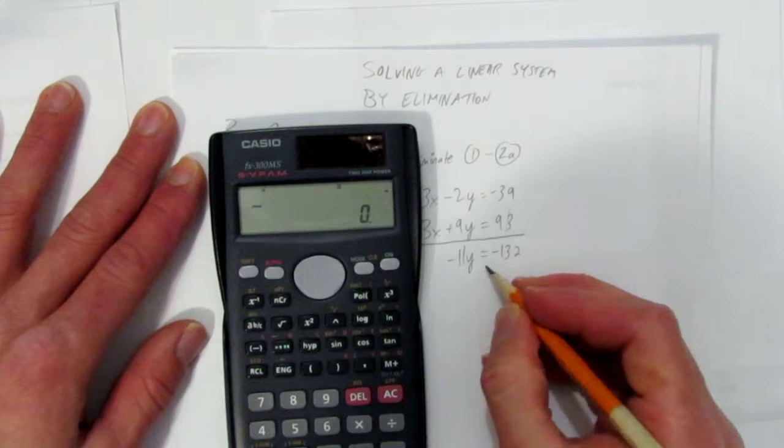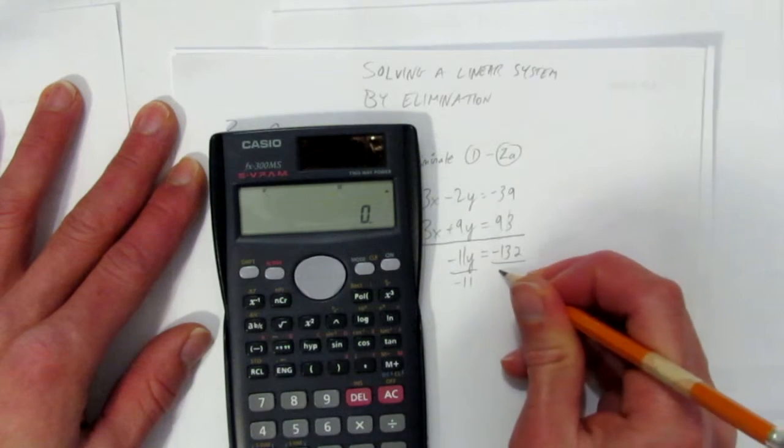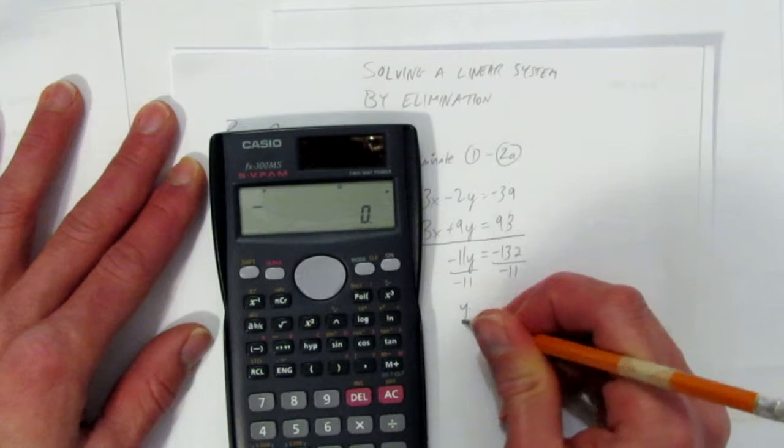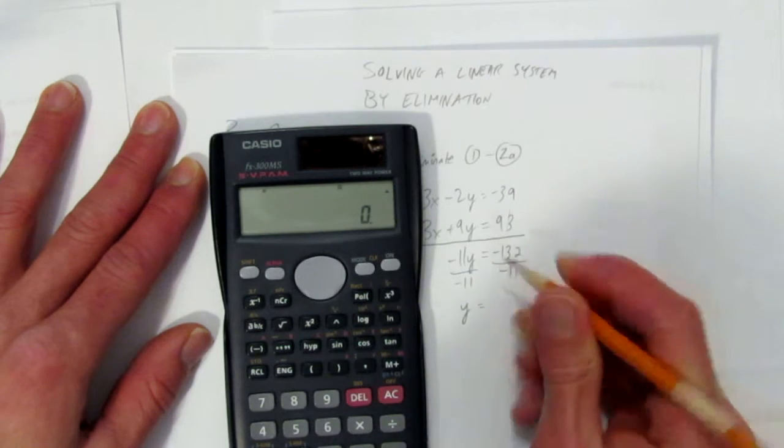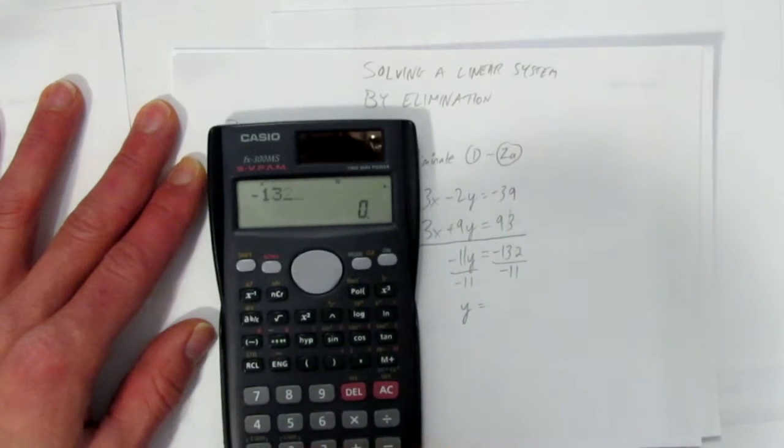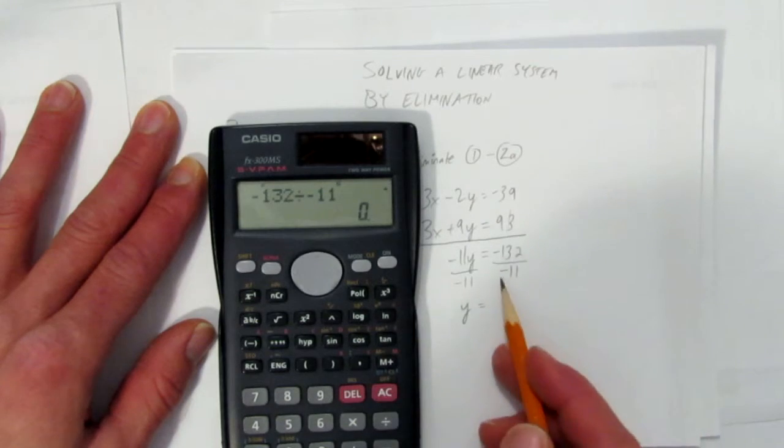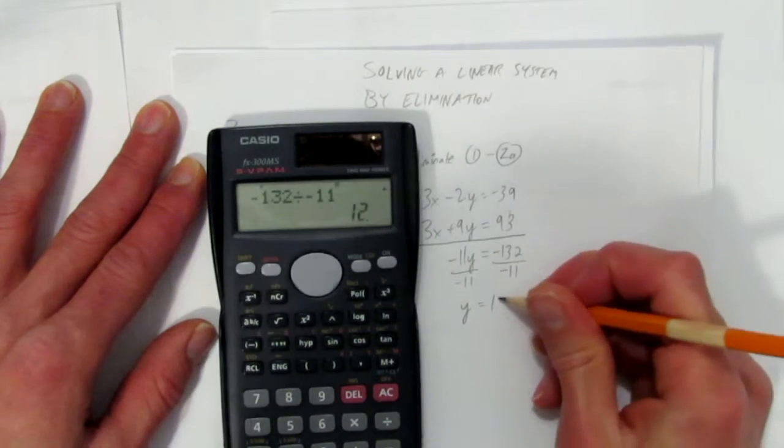Now, how do you get y by itself? Divide by whatever in front of y, in this case negative 11 on both sides. On the left you get just y equals, and on the right, what's negative 132 divided by negative 11? You didn't even need the negatives, you know they're going to cancel out, and you get y equals 12.